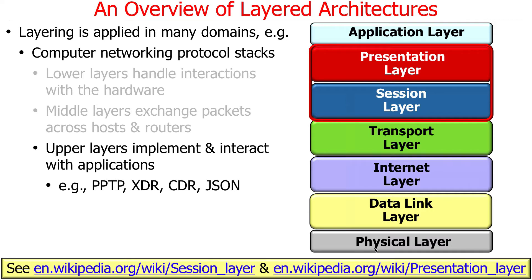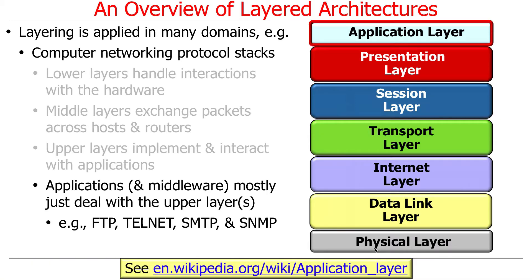The upper layers are used to implement and interact with applications — encoding data to handle differences in hardware, instruction byte order, or communicating over point-to-point links. Applications and middleware mostly deal with the upper layer stuff. Classic examples of application-layer protocols from a networking perspective include FTP, Telnet, RLogin, SSH, SMTP, and SNMP. When the instructor started out, networking applications were just FTP, Remote Login, and Email — that was all you got. Of course, a lot more has happened since then.